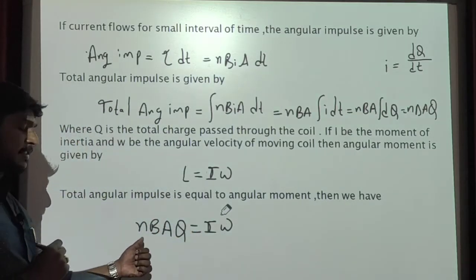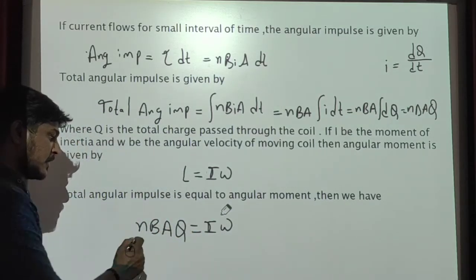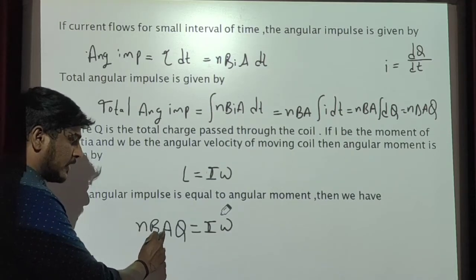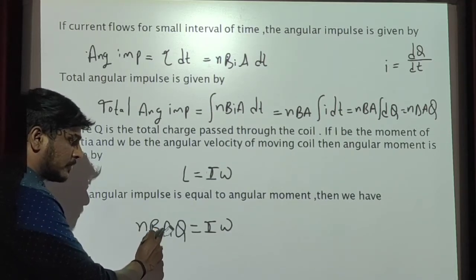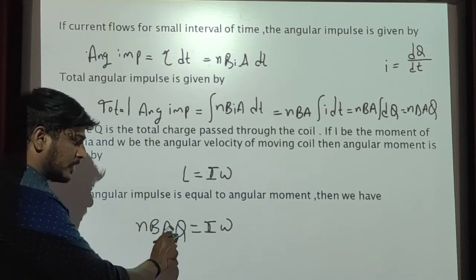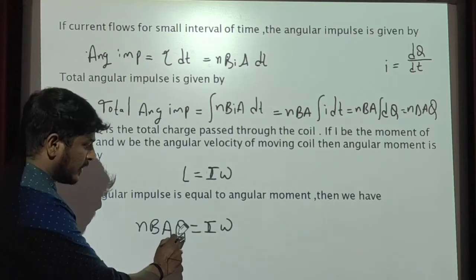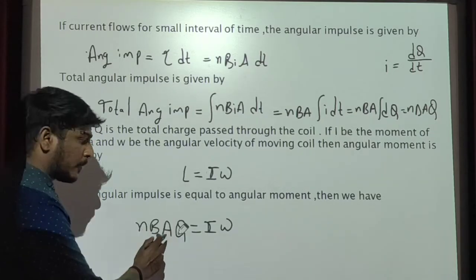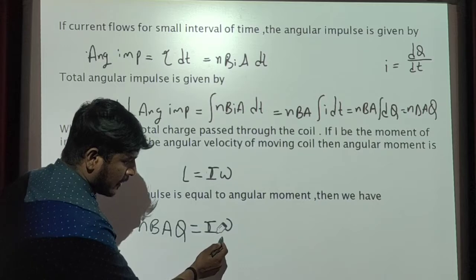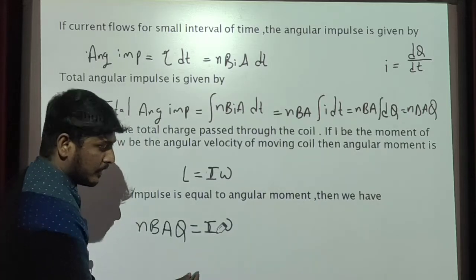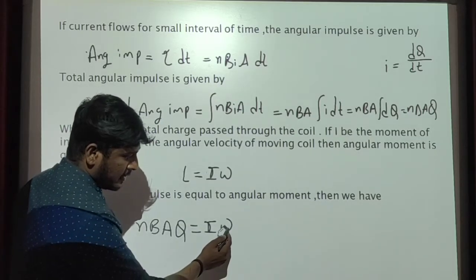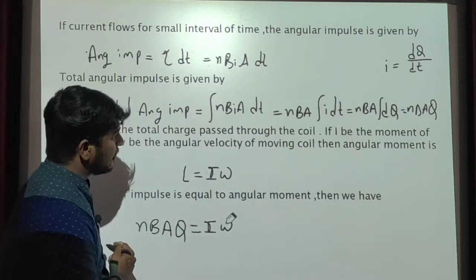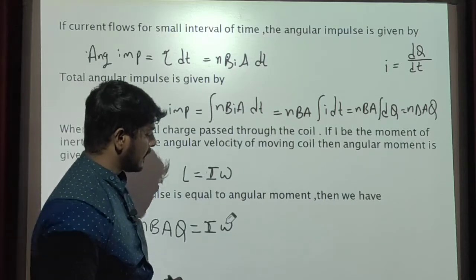Where N is the total number of turns, B is the magnetic field, A is the area of the copper coil, q is the total charge which is passed through the copper coil — which equals I omega, where I is the moment of inertia and omega is the angular frequency.